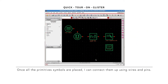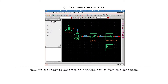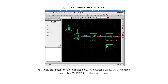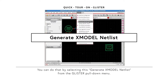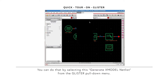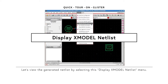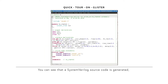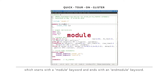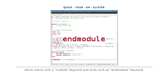Once all the primitive symbols are placed on the schematic, I can connect them up using wires and pins. Now we're ready to generate an X-model netlist from this schematic. You can do that by selecting Generate X-model netlist from the Glister pull-down menu. Let's view the generated netlist by selecting the Display X-model netlist menu. You can see that a SystemVerilog source code is generated, which starts with a module keyword and ends with an end module keyword.